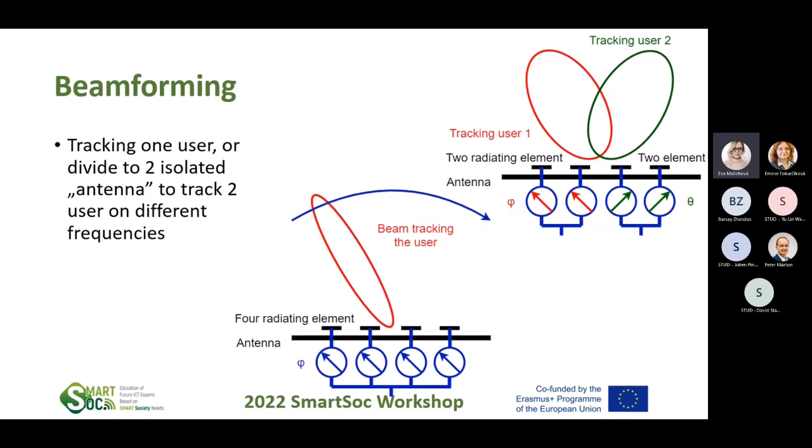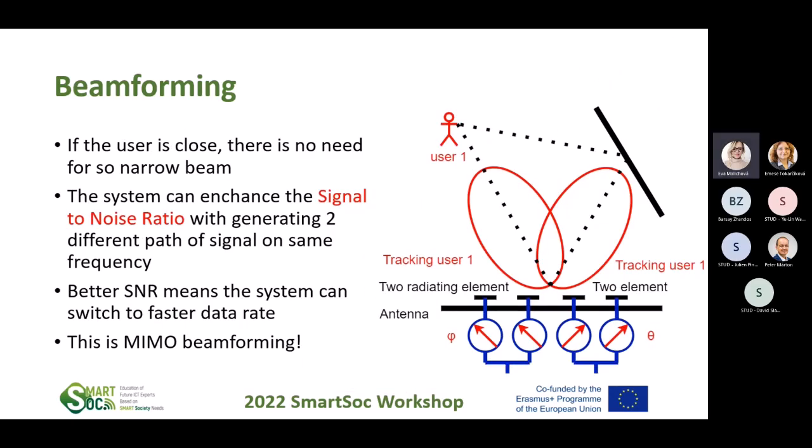What if I'm creating not one beam from one antenna, but two different beams with two different frequencies? I can follow two distinct users. If the user is close and the link is good, a narrow beam gives good reception. Then I can make a wider beam. The system can enhance the signal-to-noise ratio by generating two different paths of signals at the same frequency. It's not only a bad thing to create multipath fading — it can actually be employed for tracking the user. In big city environments there are many surfaces where high frequencies reflect — the higher the frequency, the better it reflects.